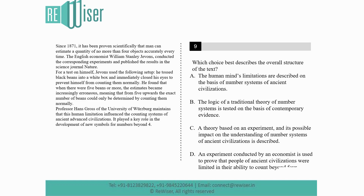To understand the overall structure of the text, we need to look at each paragraph. The first part is scientifically proven — William Stanley Jevons's experiment shows that when there were five beans or more, estimates became increasingly erroneous, meaning it's not possible to accurately count more than four. This is proven by experiment.